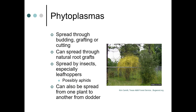Phytoplasmas are spread through budding, grafting, or cutting. They can spread through natural root grafts, and they are spread by insects — especially leafhoppers, possibly aphids — and dodder, the parasitic plant, can actually spread it from one plant to another.